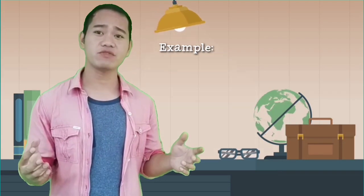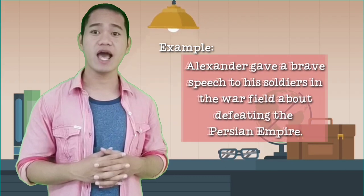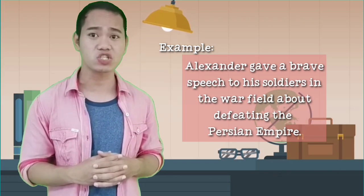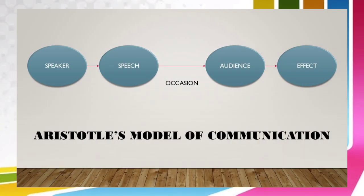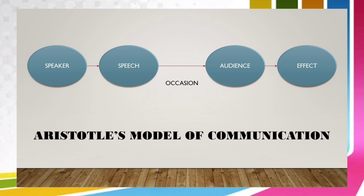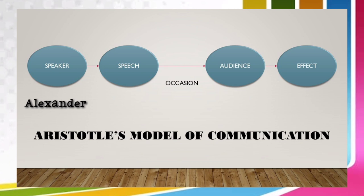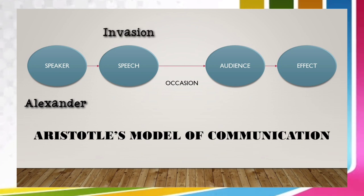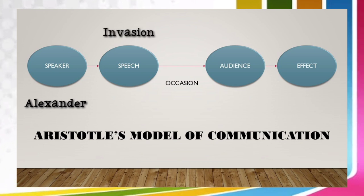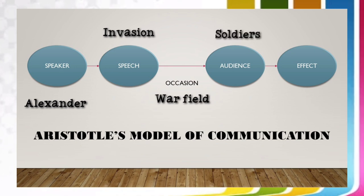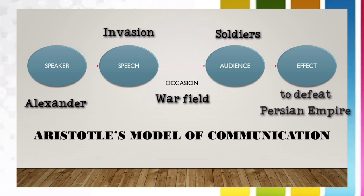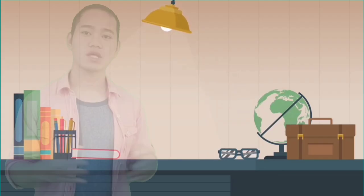One famous example given for this model is when Alexander gave a brave speech to his soldiers in the war field about defeating the Persian Empire. In the given example, there are only five elements of communication in play: Alexander the speaker, his invasion, the speech or what the speech is all about, war field, the occasion or the setting, soldiers, the audience or receivers, and to defeat the Persian Empire, the effect.